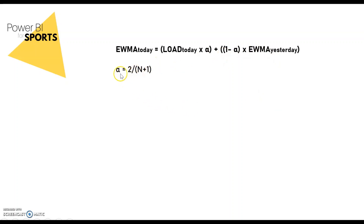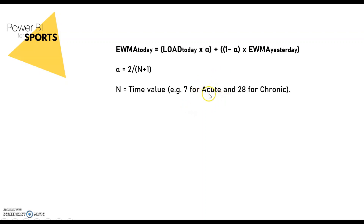In this equation, alpha equals 2 divided by (n + 1), where n is the time value. For the acute calculation you use 7 (seven days), and 28 for chronic. If in your case you use 6 for acute and 21 for chronic, then those are the values you use for n — just put in whatever number of days your acute or chronic load covers.